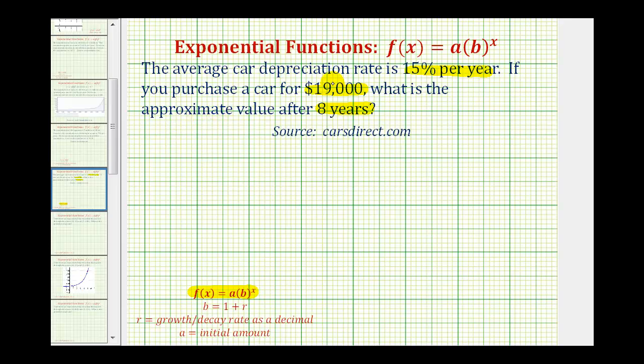Because our function will give the value of the car after time in years, our function will be v(t), which is equal to the initial price of the car, $19,000, times 1 + the depreciation rate expressed as a decimal.